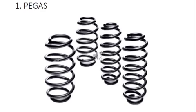Komponen yang pertama adalah pegas. Itu adalah gambar pegas coil atau coil spring. Fungsi coil spring pada sistem suspensi adalah untuk menyerap kejutan dan getaran pada roda-roda yang diterima dari jalan agar kejutan dan getaran tersebut tidak diteruskan ke bodi kendaraan secara langsung.